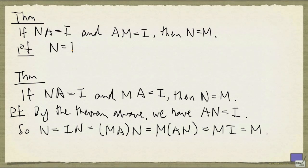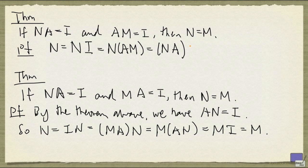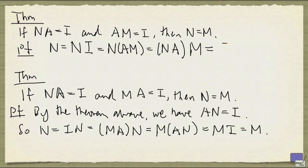The proof is even easier than this previous theorem. So let's start with N, and write that as N times I. And I is A times M, and by the associativity of matrix multiplication, I can rewrite this as this. And N times A is I, so this is I times M, and that's just M.